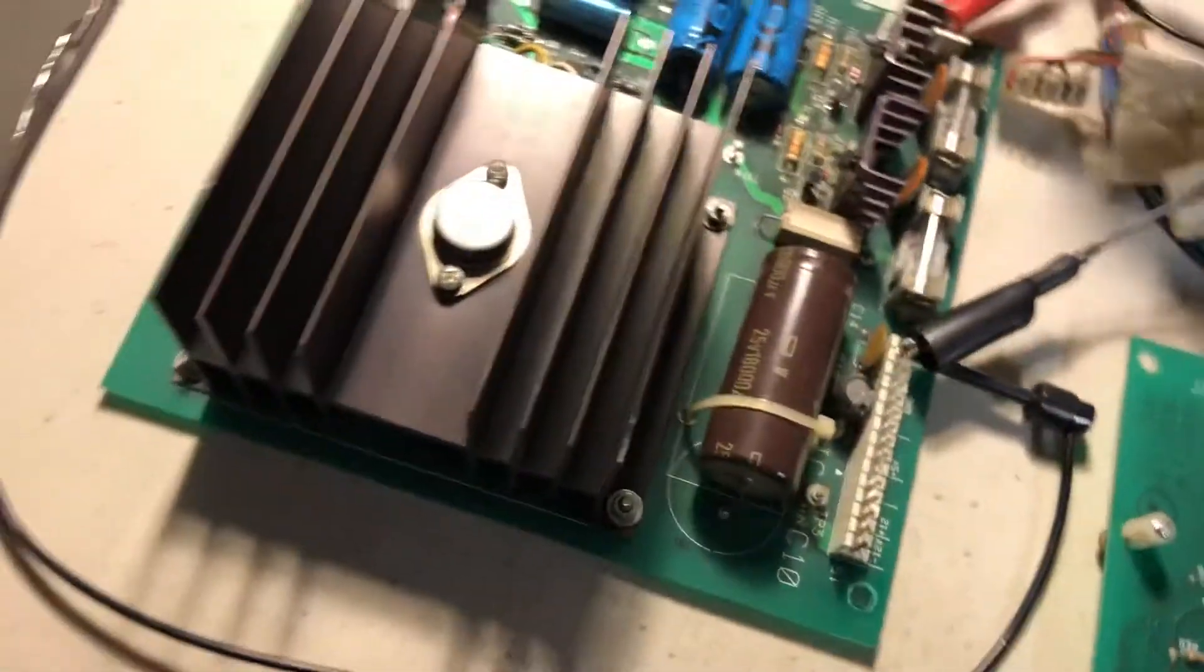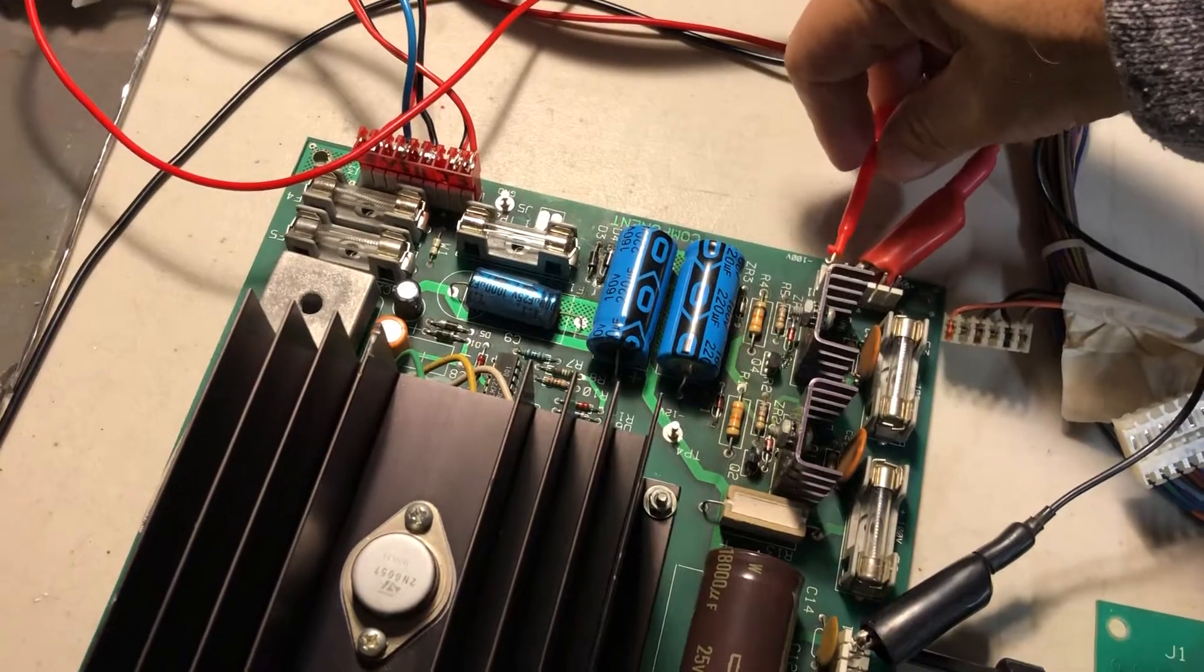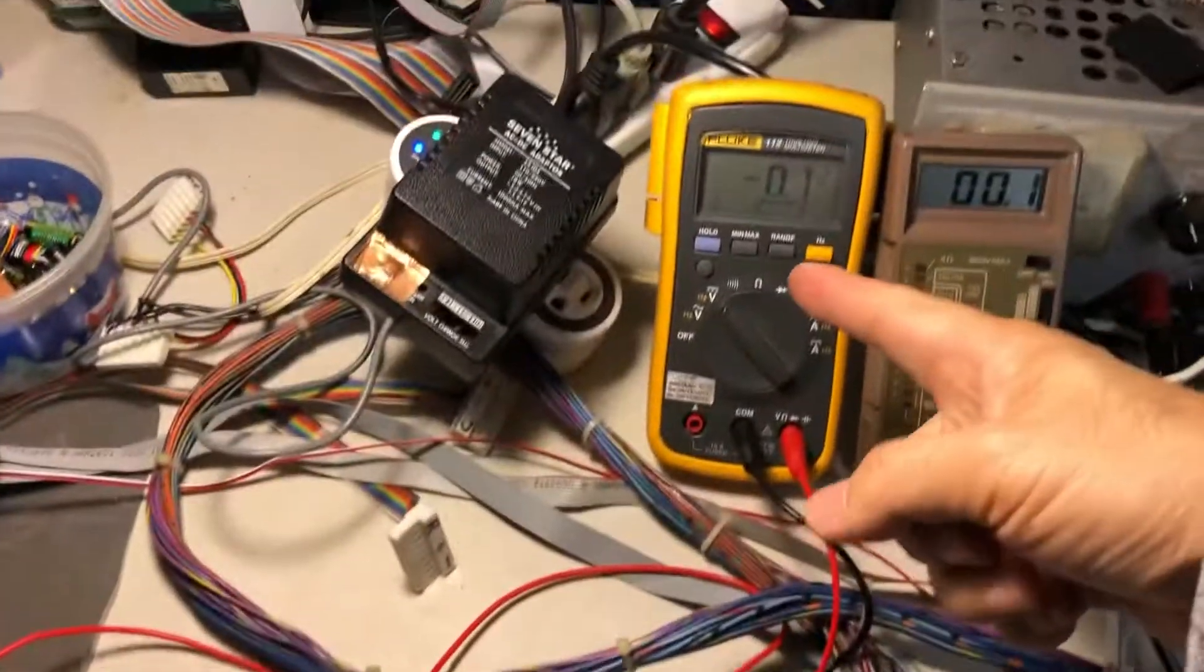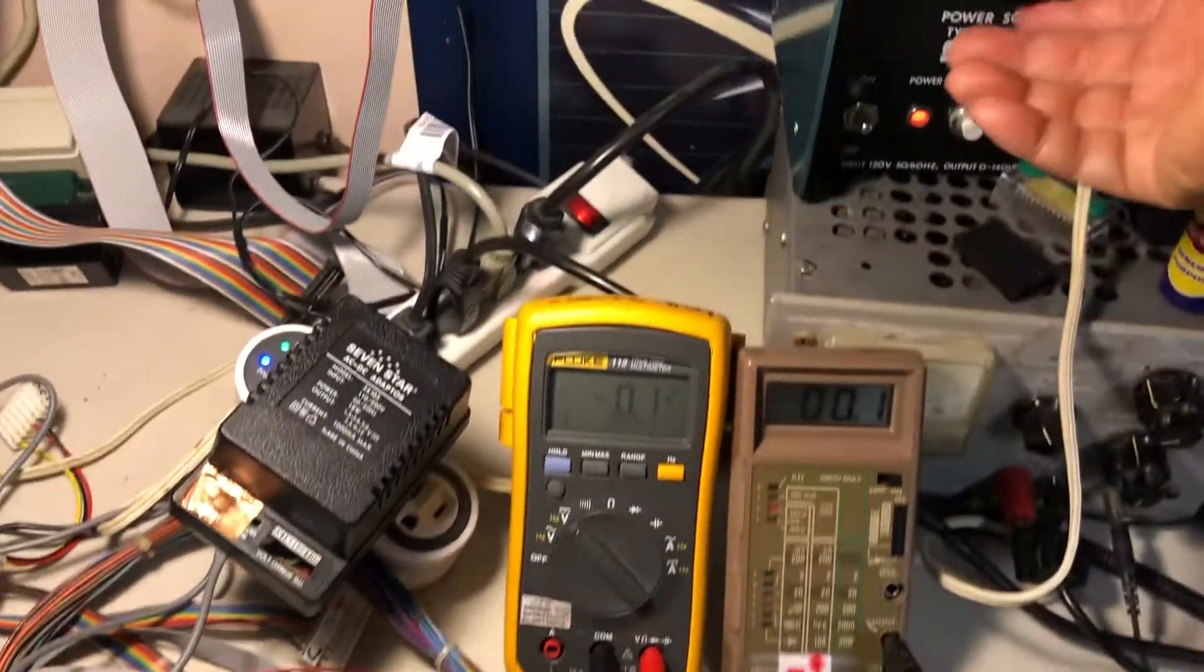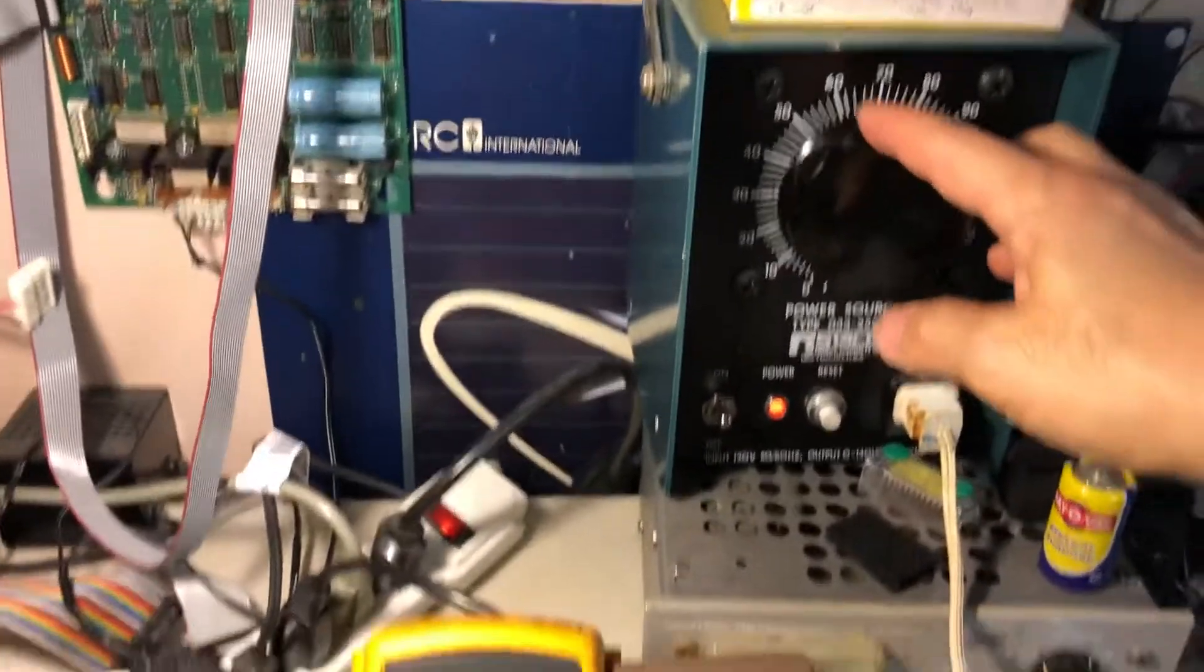Now we're going to look at the high voltage. This meter will show the negative high voltage and this is the positive. It's going to be controlled by this variable transformer.